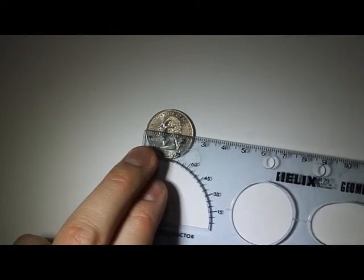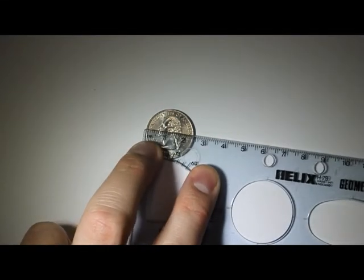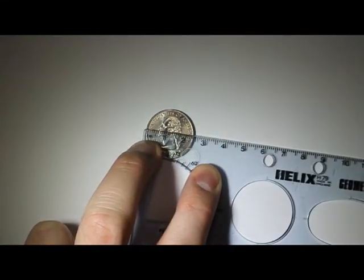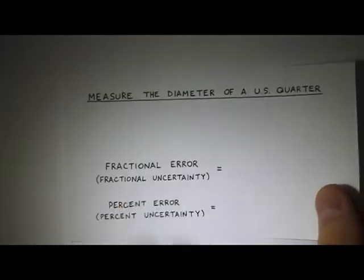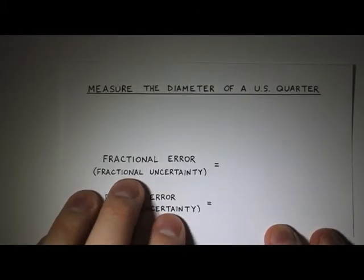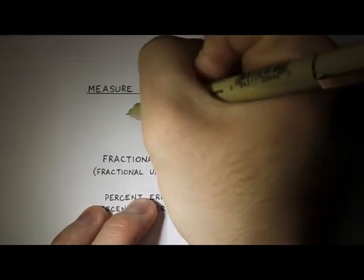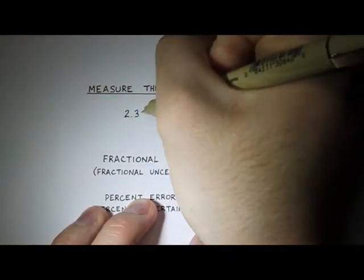So I try and get a good estimate here for this diameter of the quarter. And it looks to be, let's say, maybe about 2.35 centimeters. It's kind of hard to get the edge of the measurement there. We can definitely say that it's between 2 centimeters and 3 centimeters. But I would say that my measurement for the diameter of a U.S. quarter is about 2.35 centimeters.